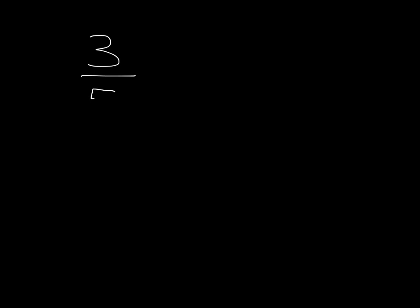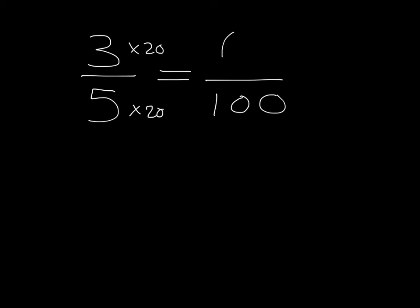Now imagine you're asked to take a fraction and write it as a percentage. Let's start with three-fifths. Since a percentage means over a hundred, all you have to do is make an equivalent fraction with a denominator of a hundred. We multiply the five by 20 to get a hundred, so we must do the same to the top: three times 20 gives 60. So three-fifths is the same as 60 over a hundred, which is 60 percent.